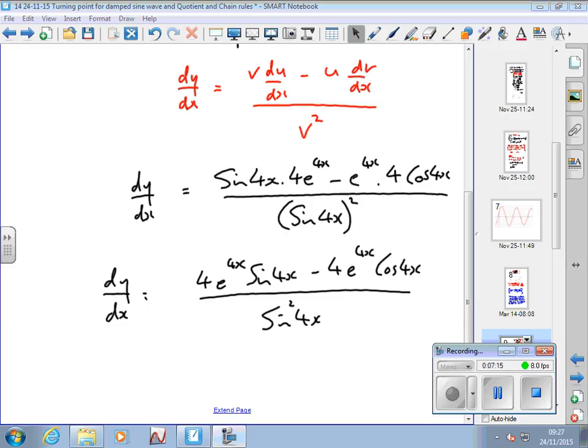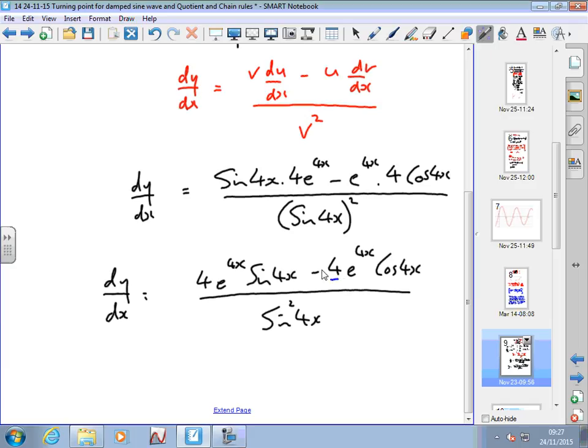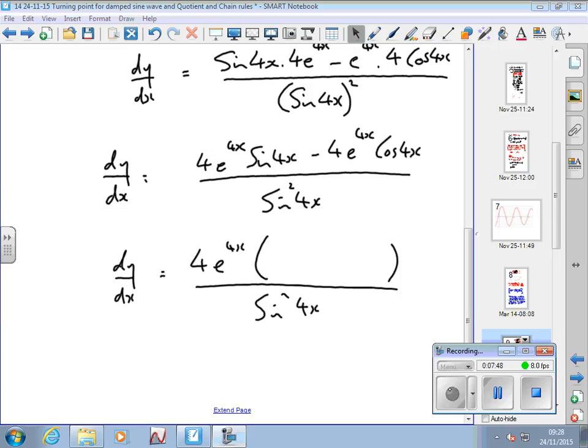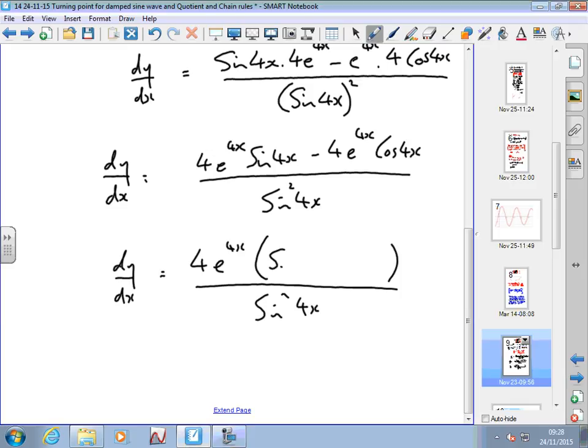Now we look at it and try to factorise. Hopefully you can see that 4 e to the 4x is common to both terms on top, so that can come outside a bracket. So I can write dy/dx equals 4 e to the 4x times bracket, all over sine squared 4x. Just put in what's inside that bracket. Hopefully you've got sine 4x minus cos 4x for our differential function.